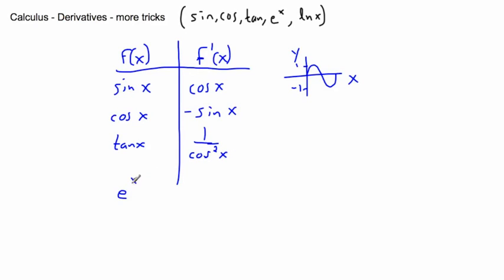Now e to the x is kind of cool. e to the x is its own derivative. As far as I know, that's the only function that does that. So e to the x, its own derivative is its own values. It's the only function that is its own derivative. And then we have natural log of x. The natural log of x is just going to be 1 over x when we do its derivative.